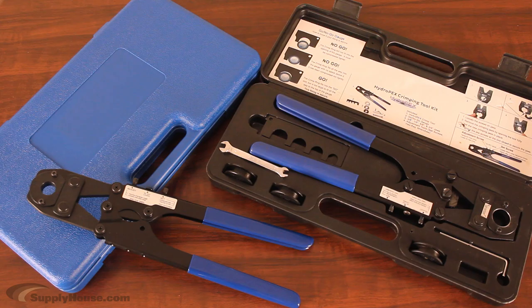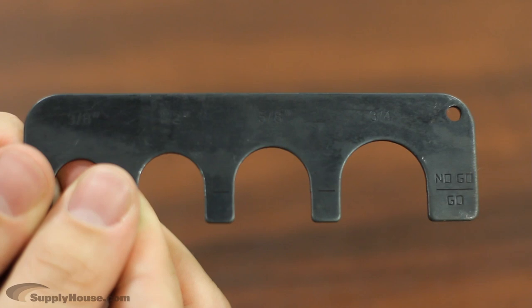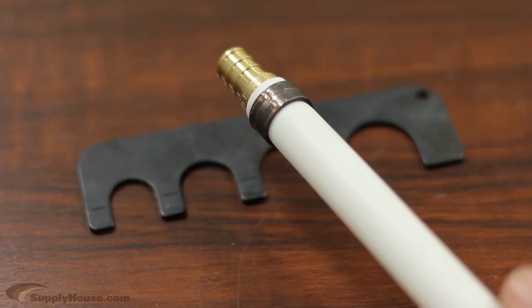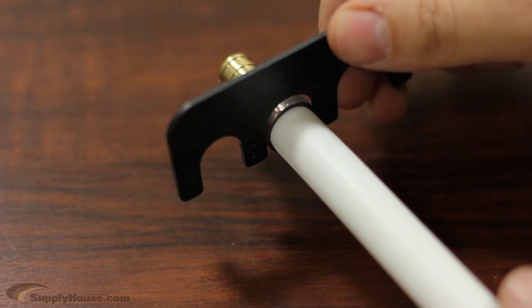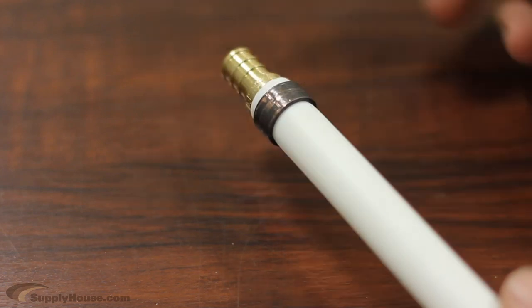Crimp tool kits usually come with a go, no-go gauge used to check your connections. If your connection is made correctly, you should be able to slide the gauge over the fitting, but you should still see a gap between the top of the fitting and the gauge.